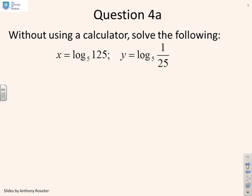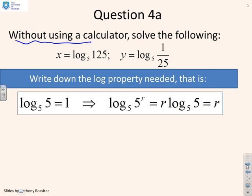First question then — without using a calculator, solve the following. You've got x equals log to the base 5 of 125, and y equals log to the base 5 of 1 over 25. What we're going to do is write down the log property that's needed. Clearly we're doing log to the base 5, so we might be using log to the base 5 of 5 equals 1, and we might also want the power property: log to the base 5 of 5 to the r equals r.